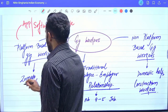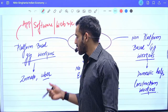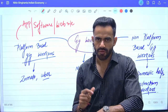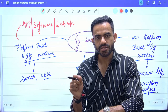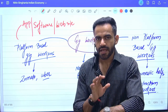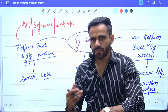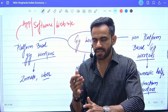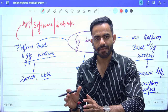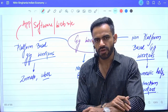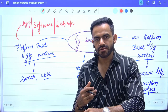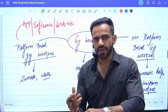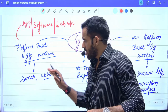For example, the delivery boys of Zomato or the Uber, Ola, or Rapido drivers receive their gigs through the application of these platforms — so they are platform-based gig workers. The problem is that they are not full-time employees. For example, a delivery boy of Zomato may also be a delivery boy of Swiggy, so neither Zomato nor Swiggy will consider them their full-time employees, and they will not receive any social security benefit. Recently, the Karnataka government introduced a bill for the welfare of platform-based gig workers.